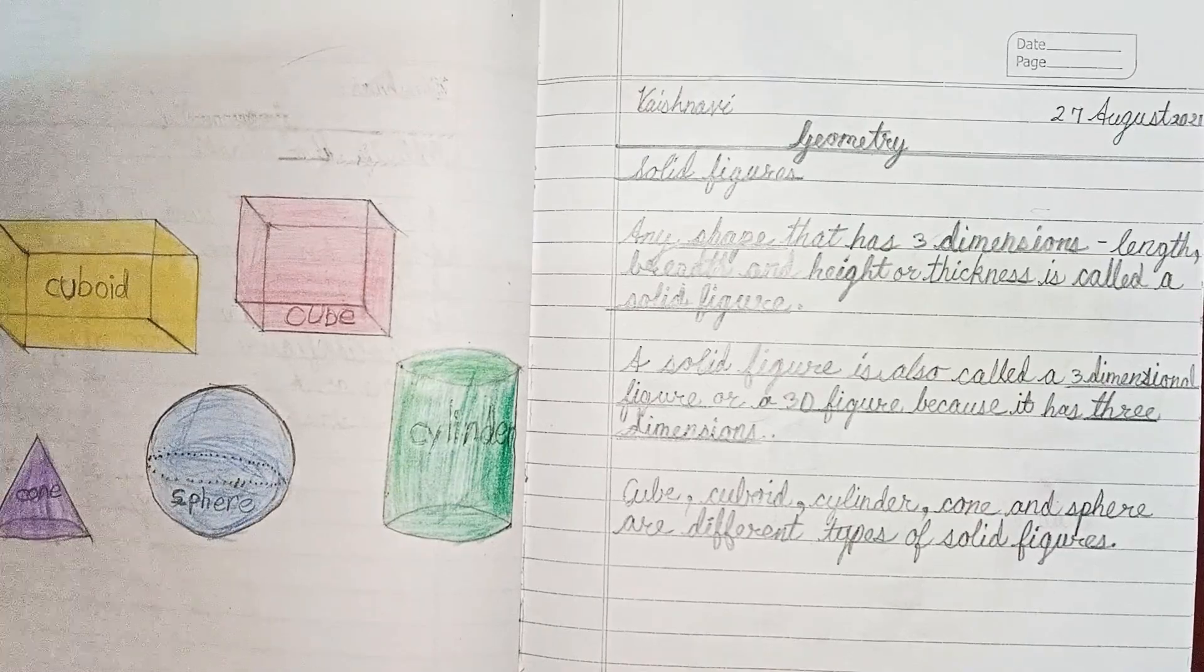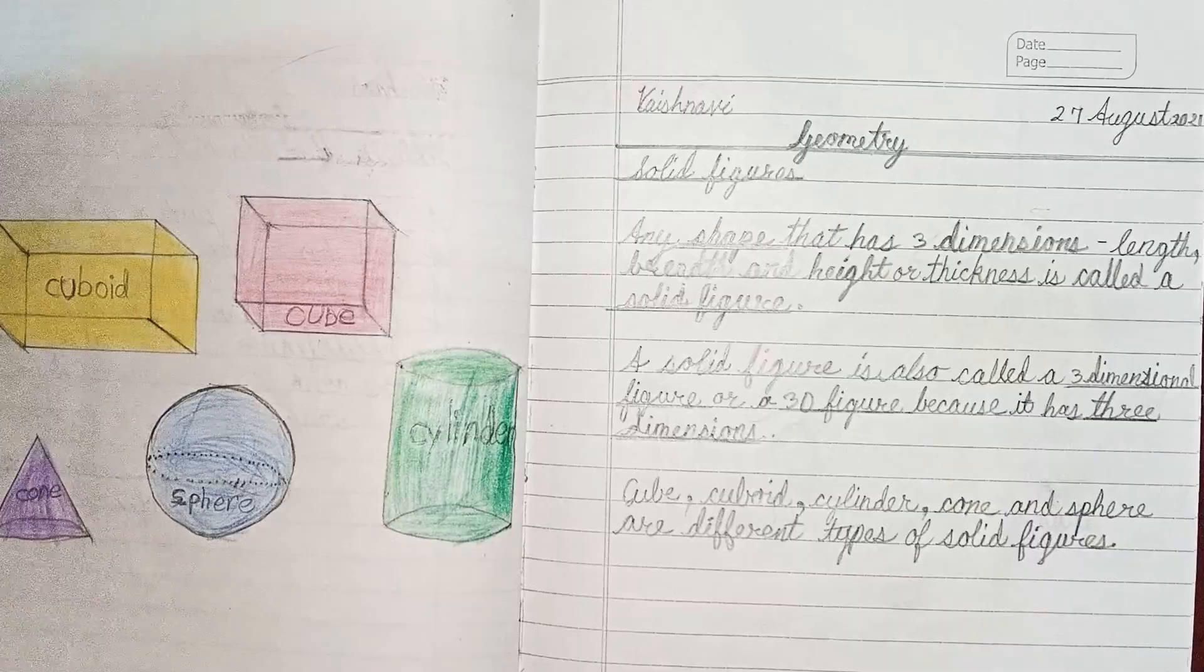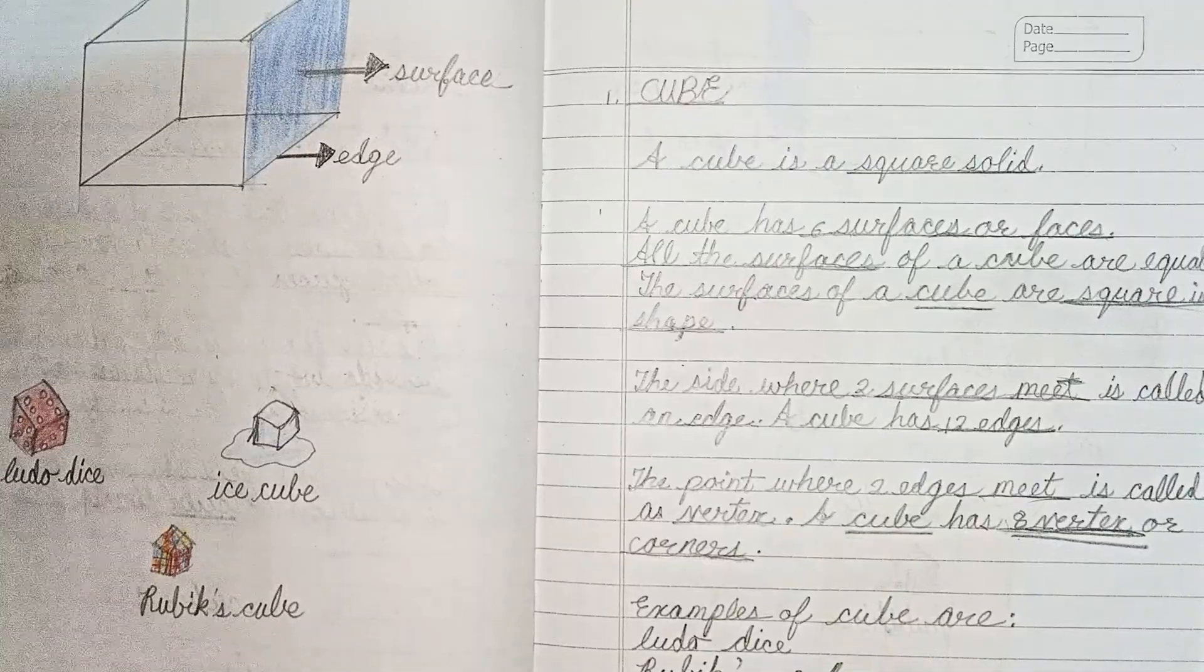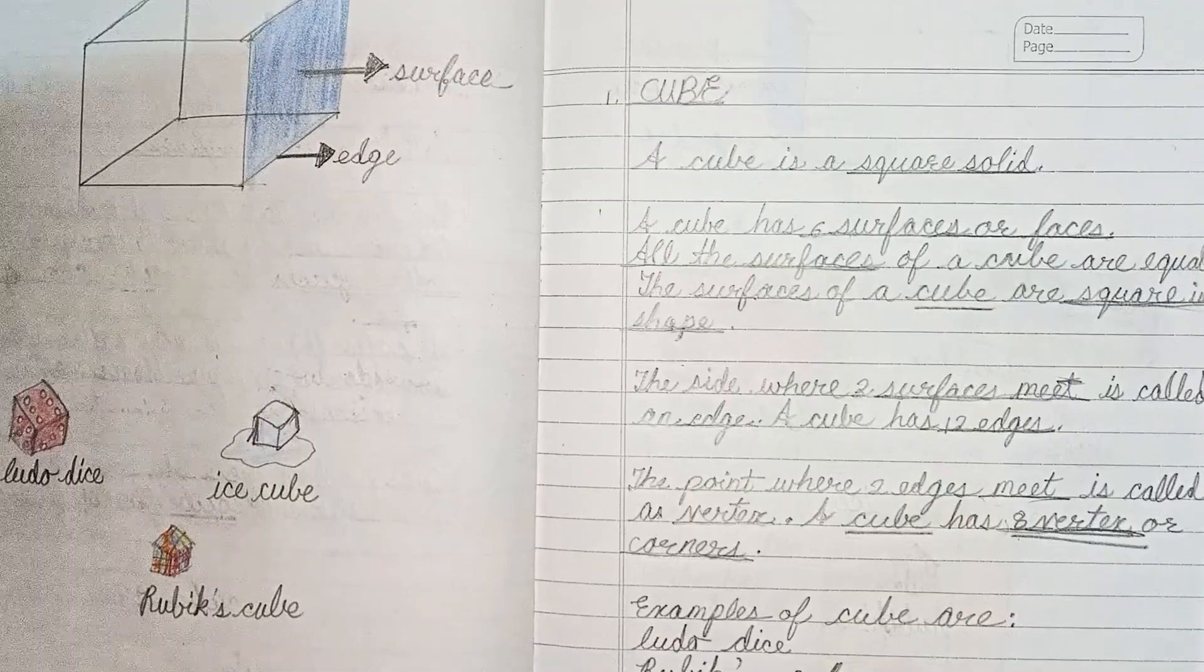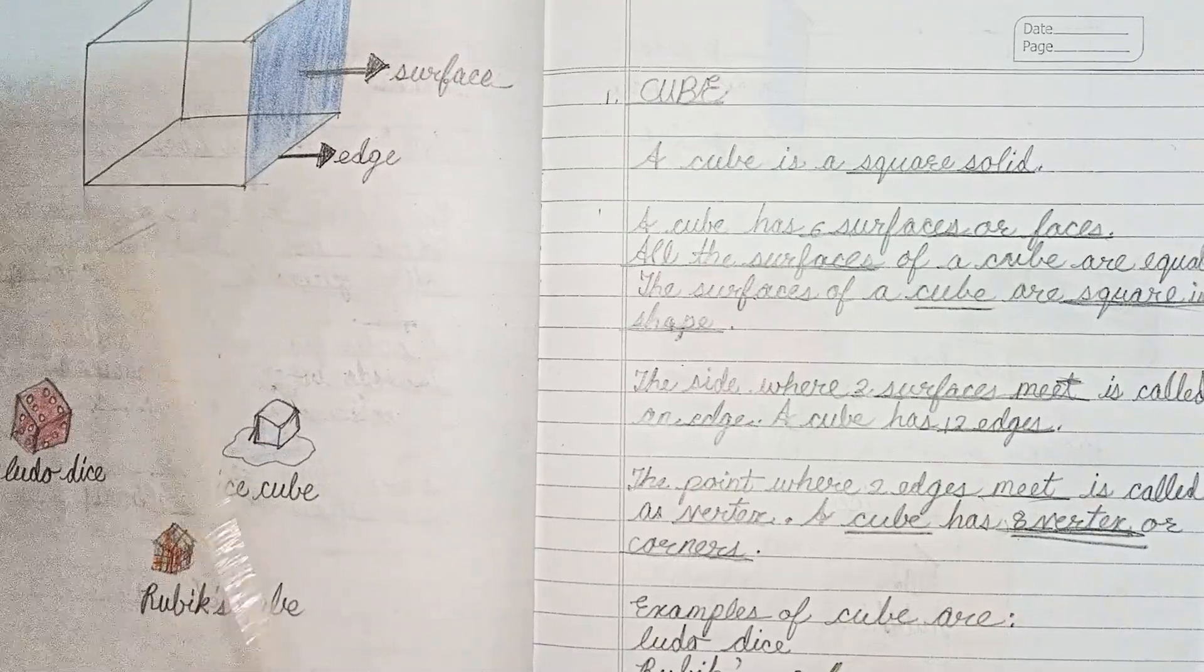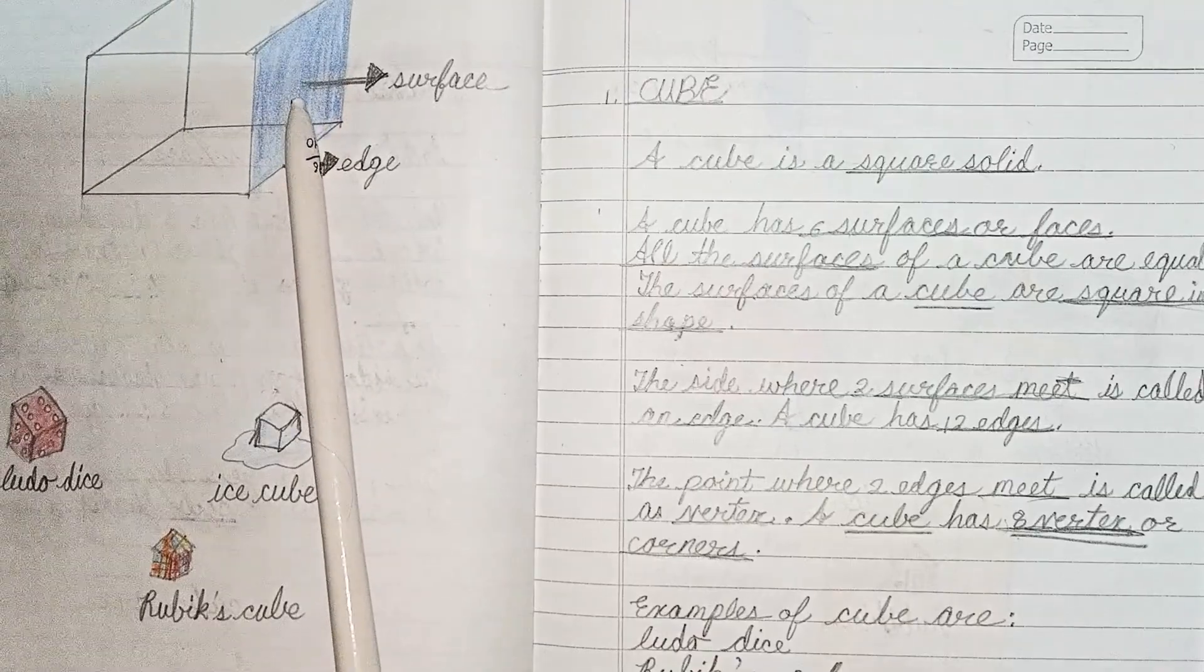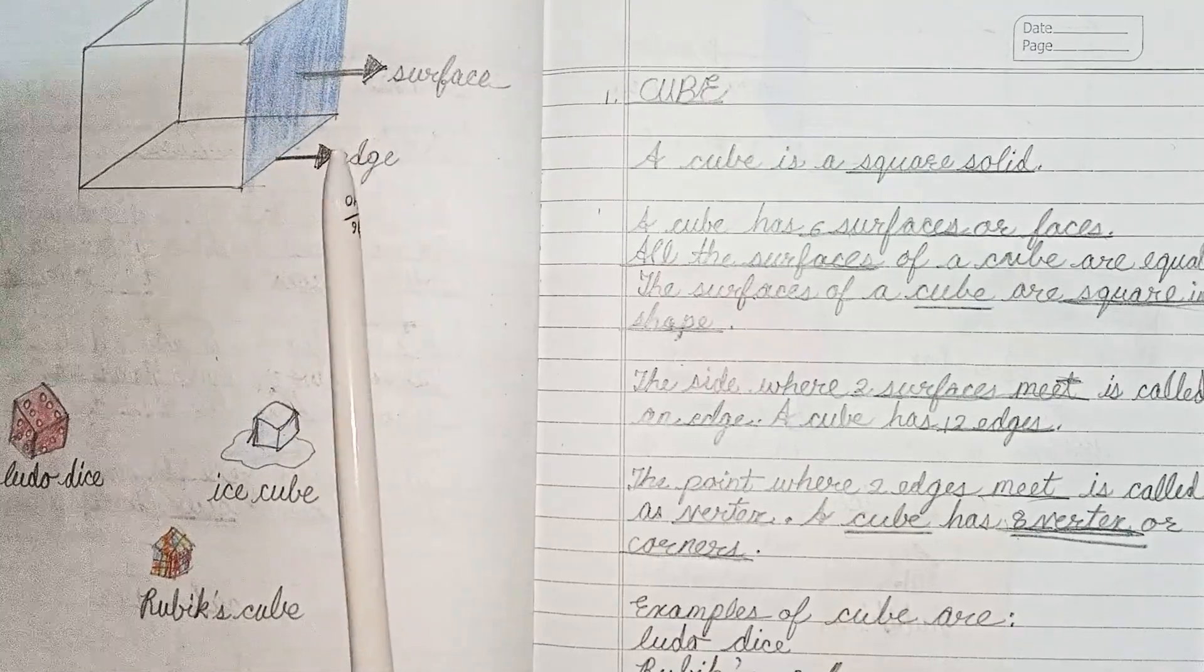Now we will discuss first of all about cube. A cube is a square solid and a cube has six surfaces. This shaded part is called its face or surface. All the surfaces of a cube are equal.